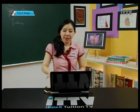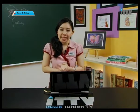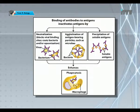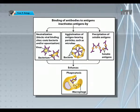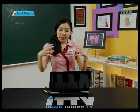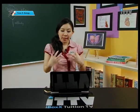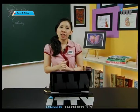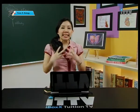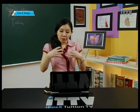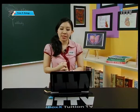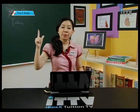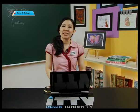Antibody-mediated agglutination of bacteria and viruses forms aggregates that simplify engulfment by phagocytes. So neutralisation, agglutination, and precipitation of antigens all allow phagocytosis to be easier, enabling phagocytes to engulf all these precipitates. Those were the three major mechanisms of action by antibodies: neutralisation, agglutination, and precipitation, which make phagocytosis easier.